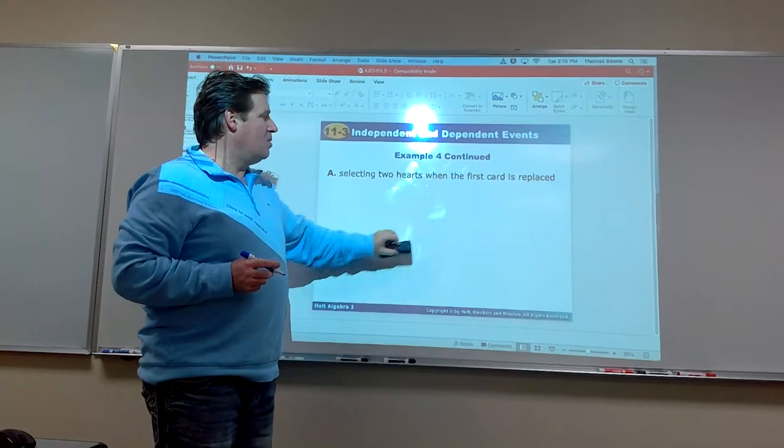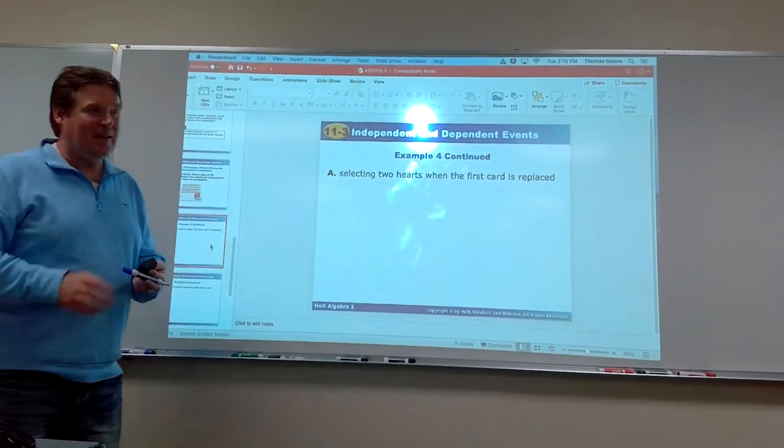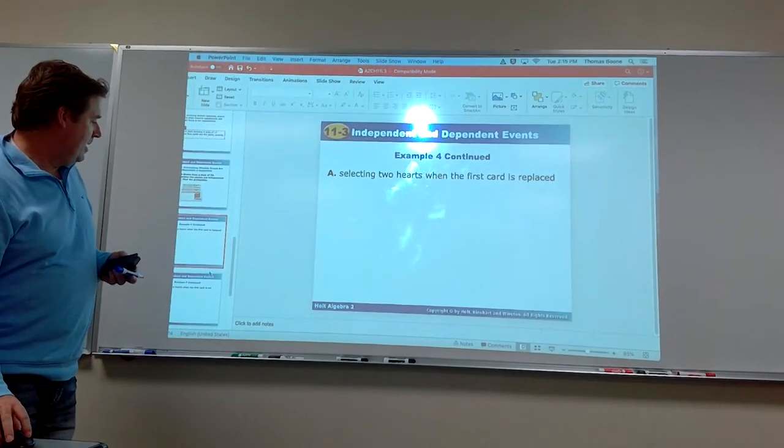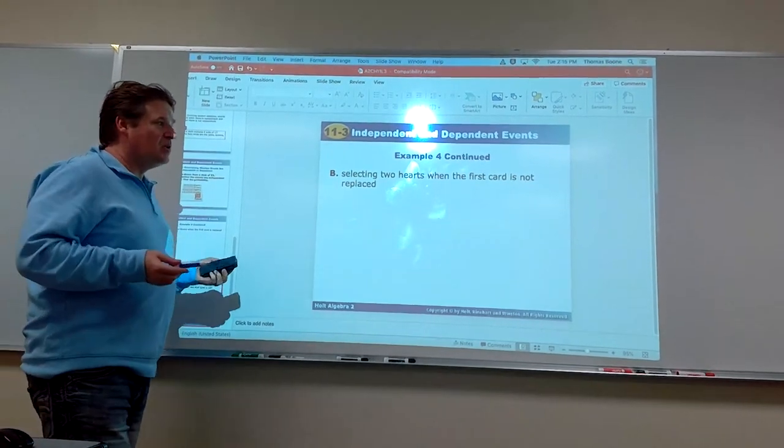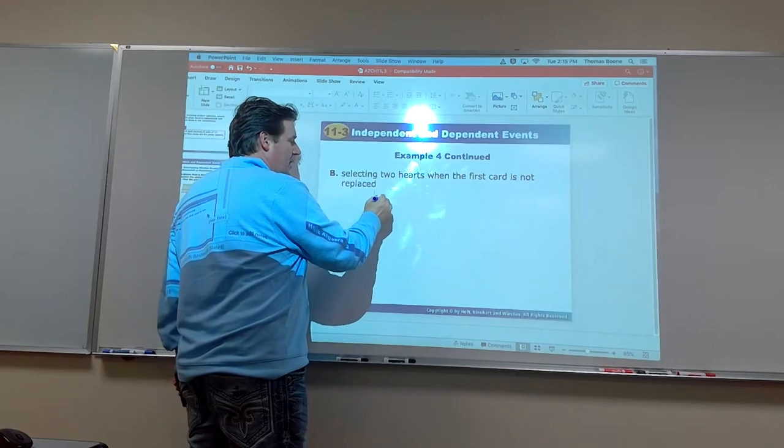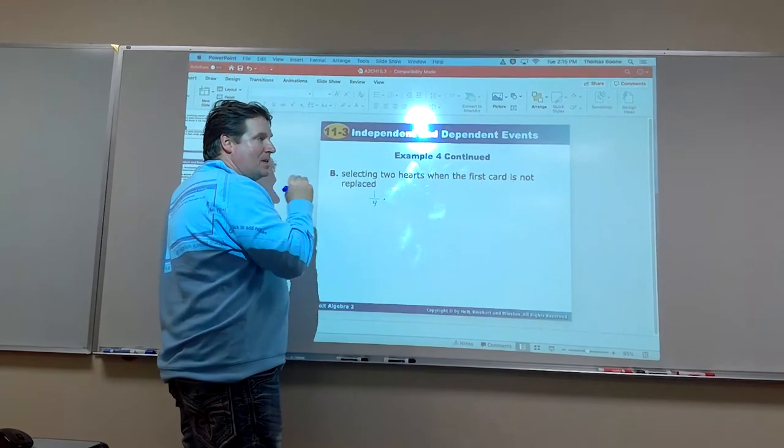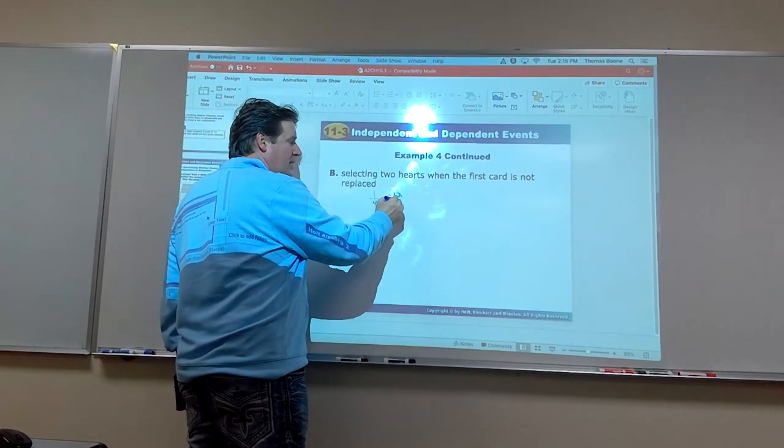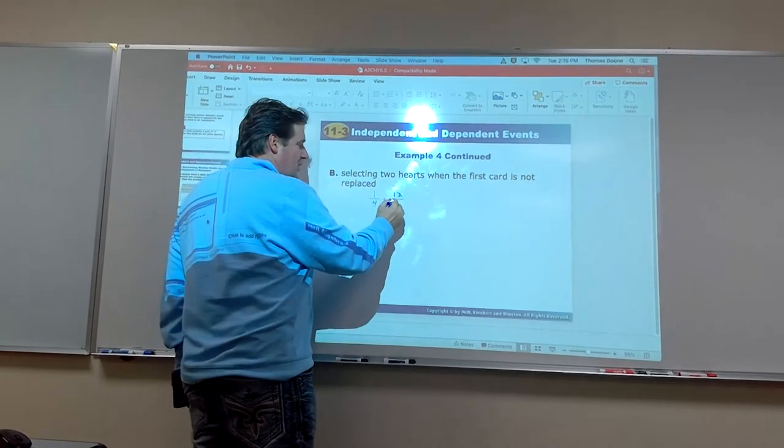So again, taking the probabilities there. That was independent because we replaced. Alright. Now let's change it up a little bit. What's probably selecting two hearts when the first card is not replaced? So I get a heart on the first one. That's 1 out of 4. Alright. Well now what happens is there's only 12 hearts left. And out of the original 52, since I don't put it back, it's 51.